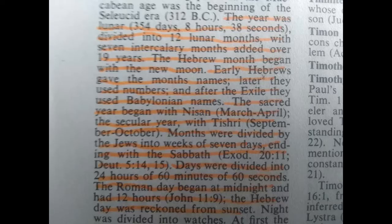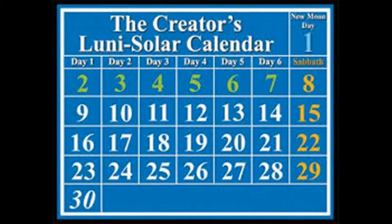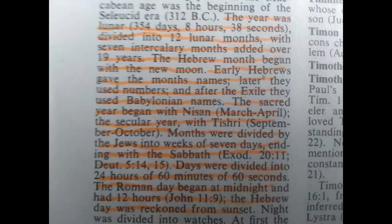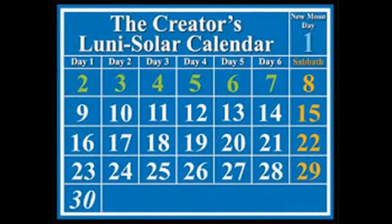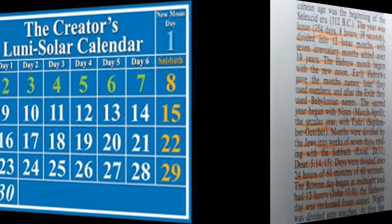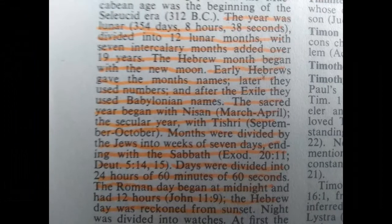Now I want to make a few points about what we just went over. It states months were divided by the Jews into weeks of seven days — that's key. You need to ask yourself: what makes a month? Weeks make a month. What makes weeks? Days make weeks. All of this is within a month. Months were divided into weeks of seven days ending with the Sabbath, and days were divided into 24 hours.